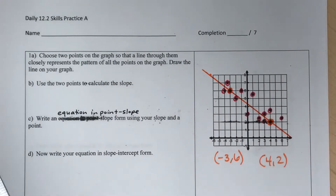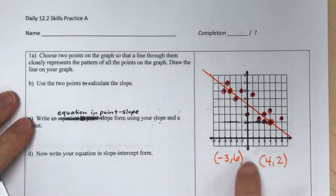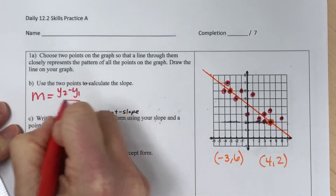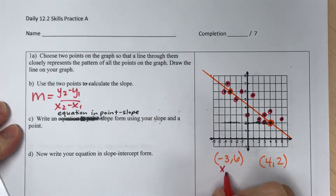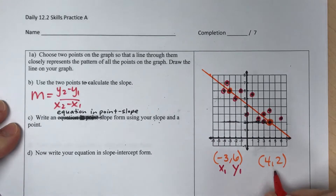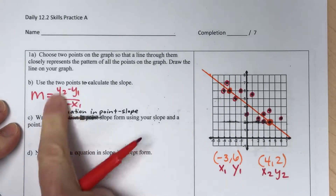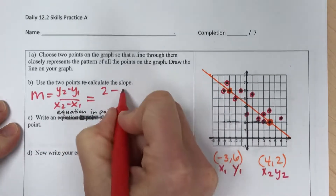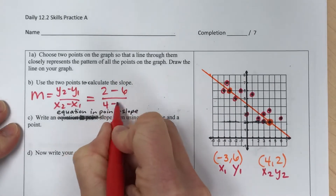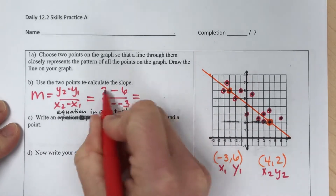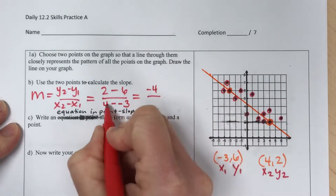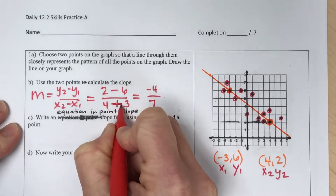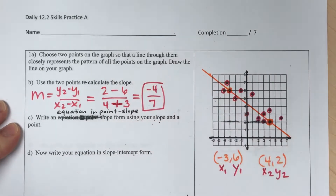Now I'm going to use these two points to calculate the slope. Slope is y₂ minus y₁ over x₂ minus x₁. My first point is x₁, y₁ = (-3, 6) and my second point is x₂, y₂ = (4, 2). Plugging in: the numerator is 2 minus 6, which equals -4; the denominator is 4 minus negative 3, which equals positive 7, because subtracting a negative means you add. So my slope is -4/7.